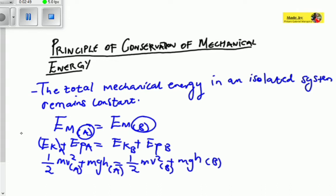Here we just expanded the formula of mechanical energy, which suggests that there is no mechanical energy lost in an isolated system — meaning the mechanical energy at the initial point and the final point is going to be the same thing. So, how do we actually use this to calculate?